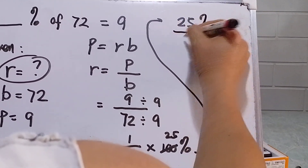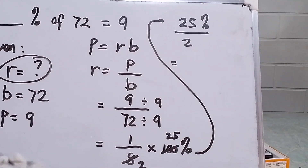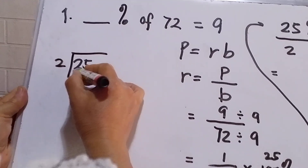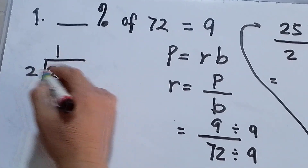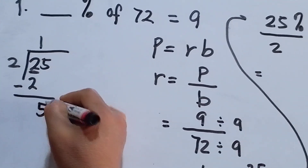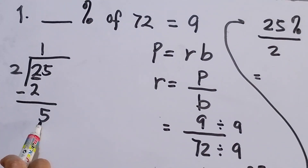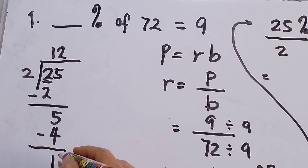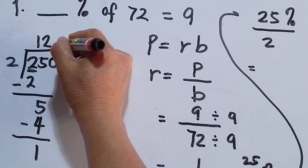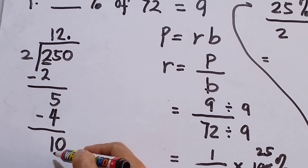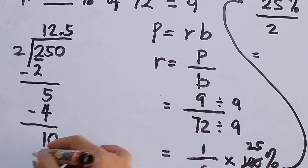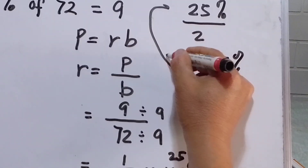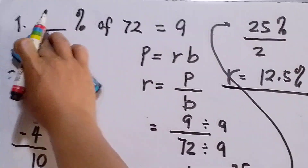We now have 25 percent over 2. Dividing 25 by 2 using long division: 2 goes into 25 twelve times with remainder 1, bringing down to get 10, and 2 goes into 10 five times. So R equals 12.5 percent.